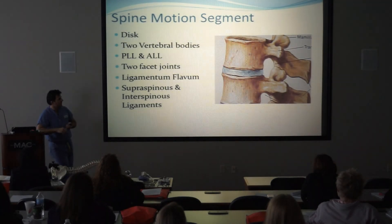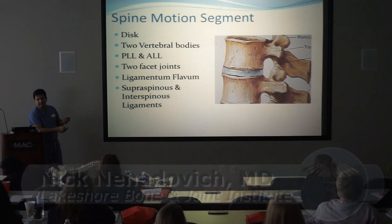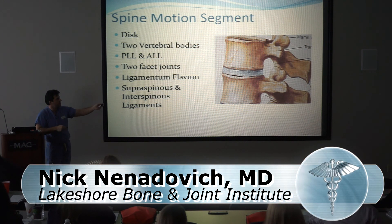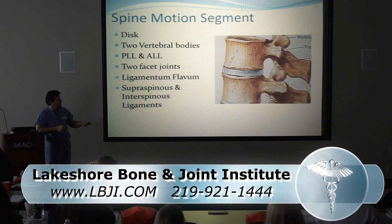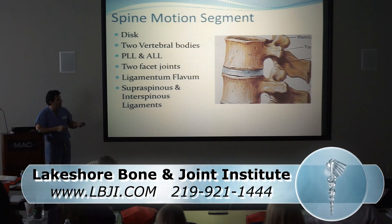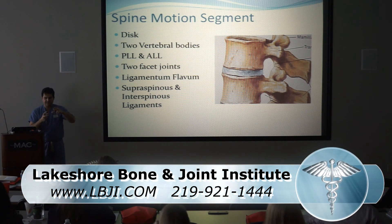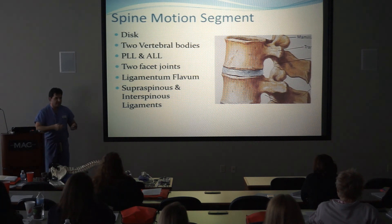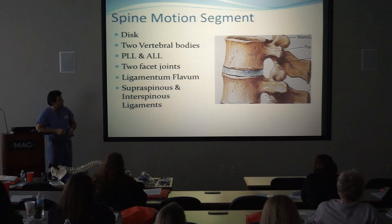Back to anatomy: spine motion segment versus spine segment — it's a nuance but an important one. A spine segment is just the bone, while a spine motion segment is the bone, disc, and another bone together. You have to have something moving in relation to something else to be a motion segment — one bone by itself doesn't move. There are also ligaments between the spinous processes and over these joints on the front and back of the spine.